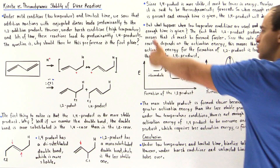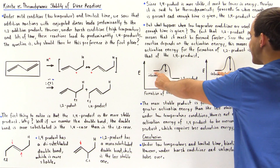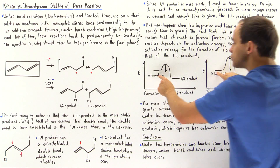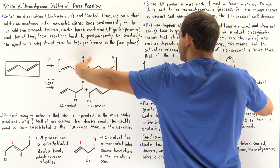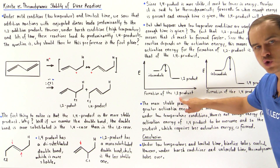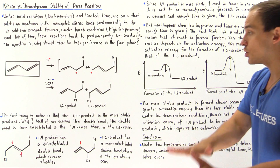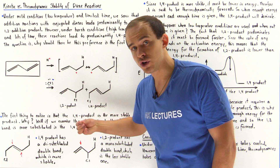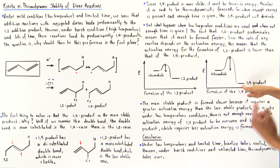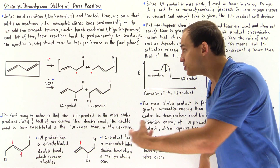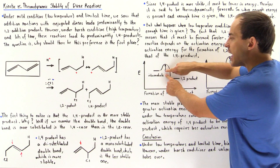Let's look at the energy diagram, where the y-axis is energy and the x-axis is reaction progress. We begin at the same intermediate — resonance-stabilized — at the same energy level. When we form the 1,2 product, its energy level is higher than that of the 1,4 product, because the 1,4 product has a di-substituted double bond and is thermodynamically more stable. At low conditions with limited time, the rate of formation of the 1,2 product is faster.